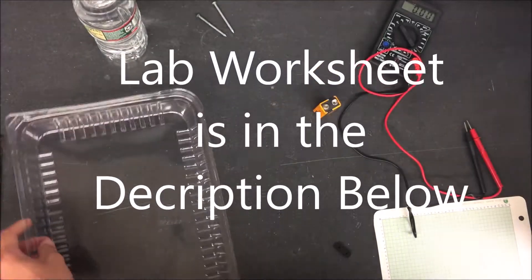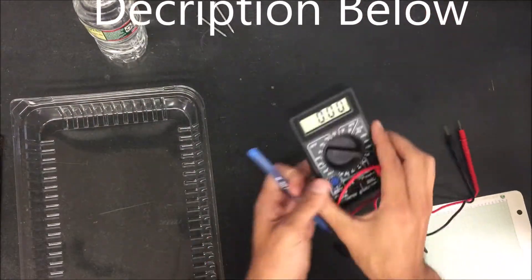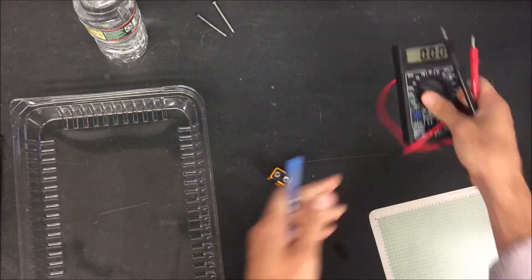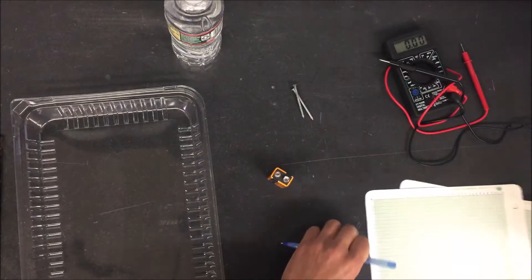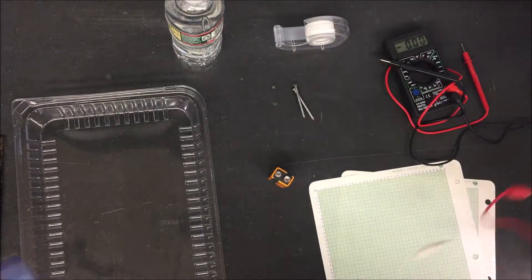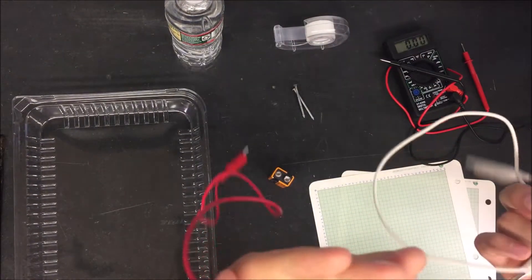You're going to need a clear plastic container, a 9 volt battery, a volt meter, two nails, some water, two graphing papers, some tape, and two alligator clips.